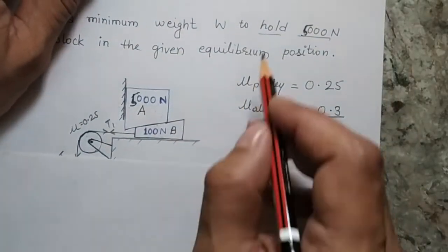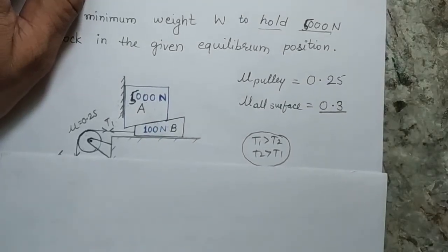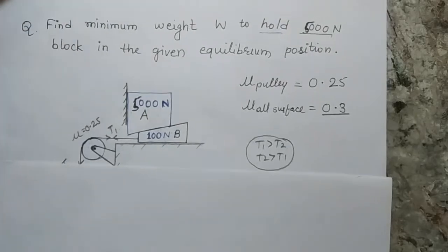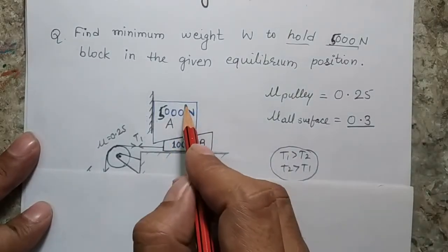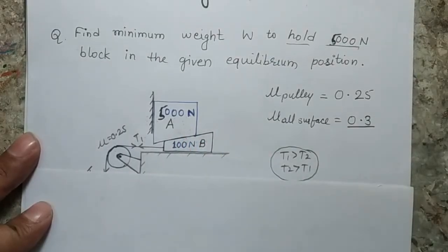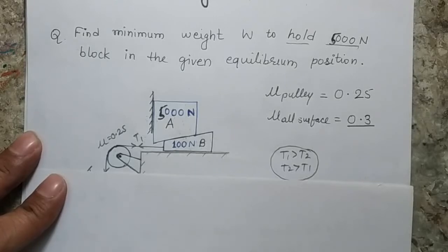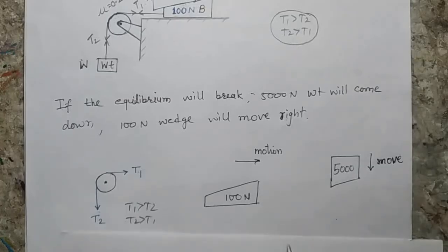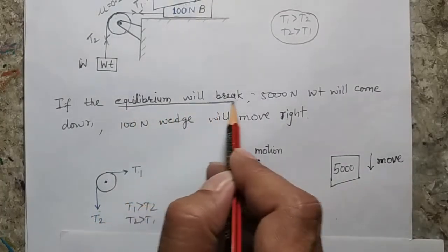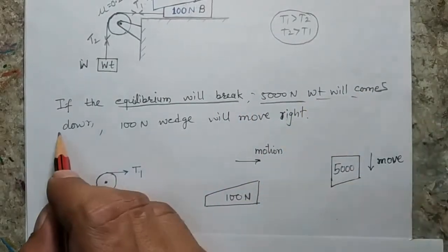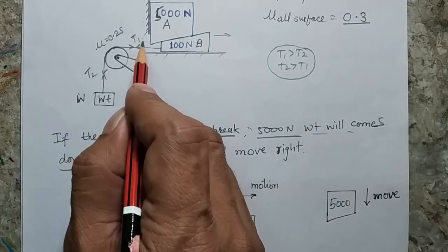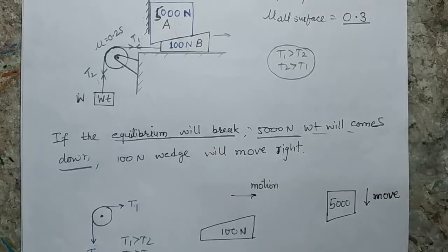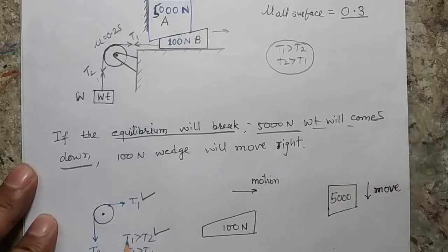I always say that to find the direction of friction, you have to imagine what will happen if the equilibrium fails. In this question, if equilibrium fails, we will not be able to hold the block — meaning the block will fall and the wedge will go towards the right. If I can identify the direction of motion, the problem is half solved. So if equilibrium breaks, the 5000 Newton weight comes down, the 100 Newton block moves in that direction. This side becomes the driver side and the other becomes the driven side. Since the driver side always has larger tension, T1 is greater than T2.